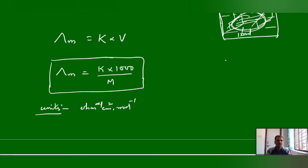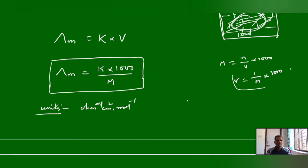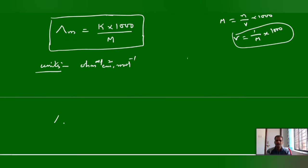To derive this formula: concentration (molarity) requires volume in milliliters, so V equals 1000 divided by M (molarity). Substituting 1000 by M in place of V gives lambda M equals K into 1000 by molarity. In SI units, the formula becomes lambda M equals K divided by 1000 times molarity, with units of ohm inverse meter squared mol inverse.